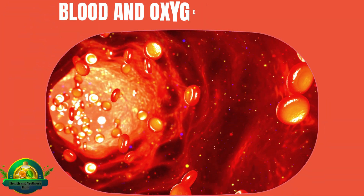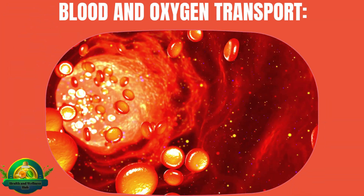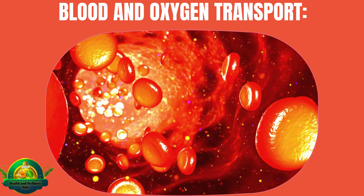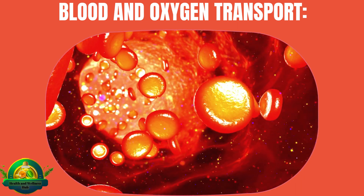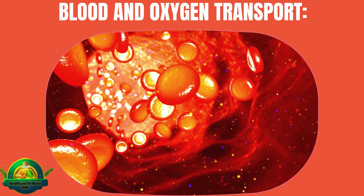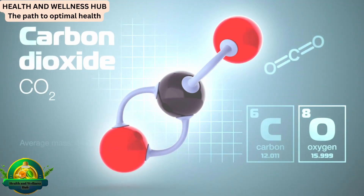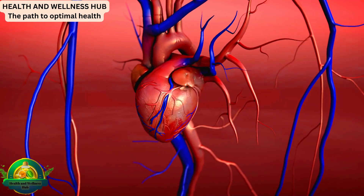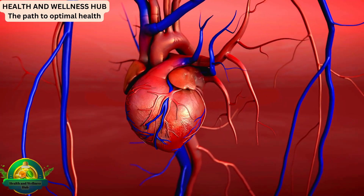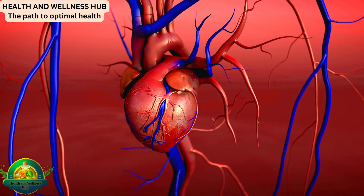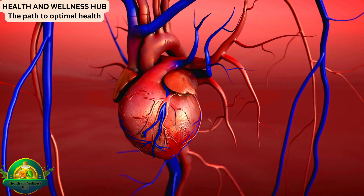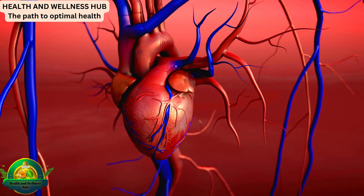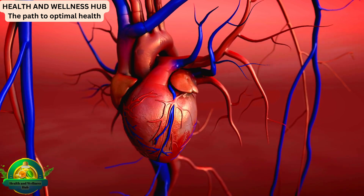Blood and oxygen transport. A key function of the circulatory system is to transport oxygen and nutrients to cells while removing waste products such as carbon dioxide. Every day, the human heart pumps approximately 2,000 gallons of blood, which travels a distance of about 12,000 miles in your circulatory system.